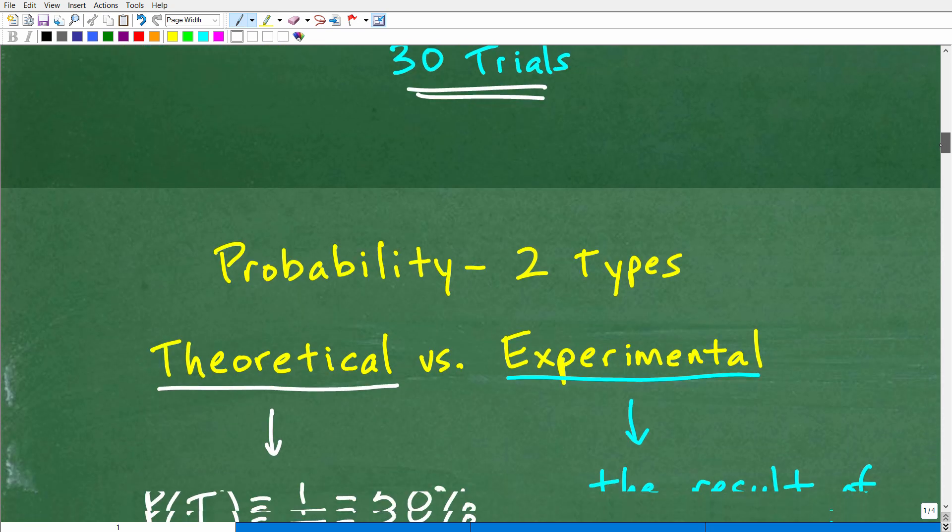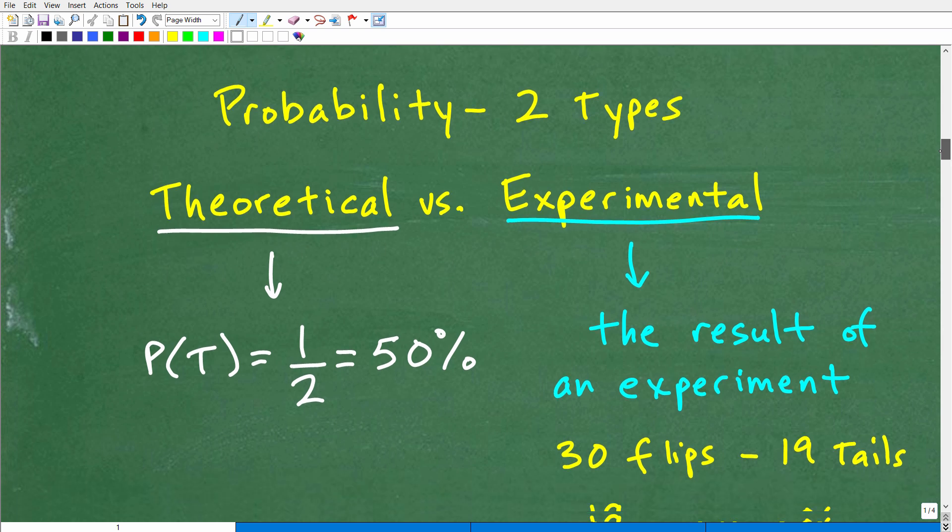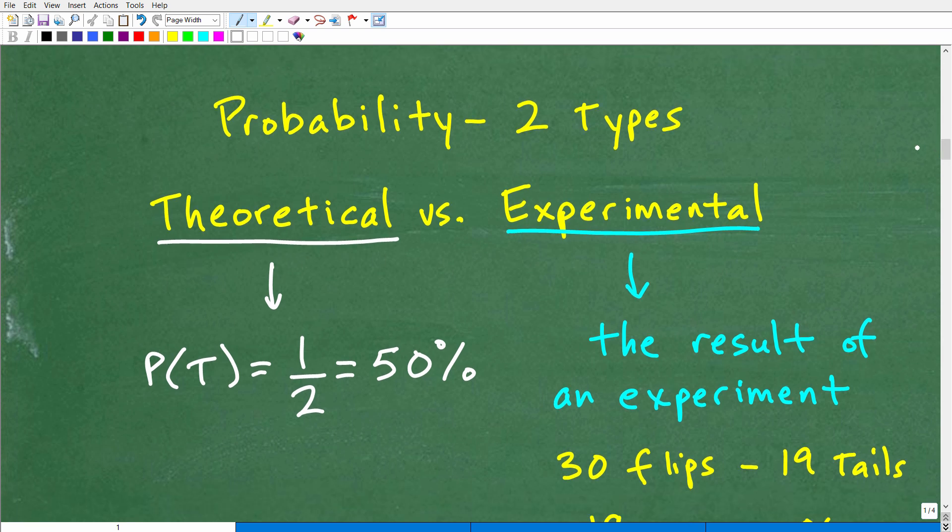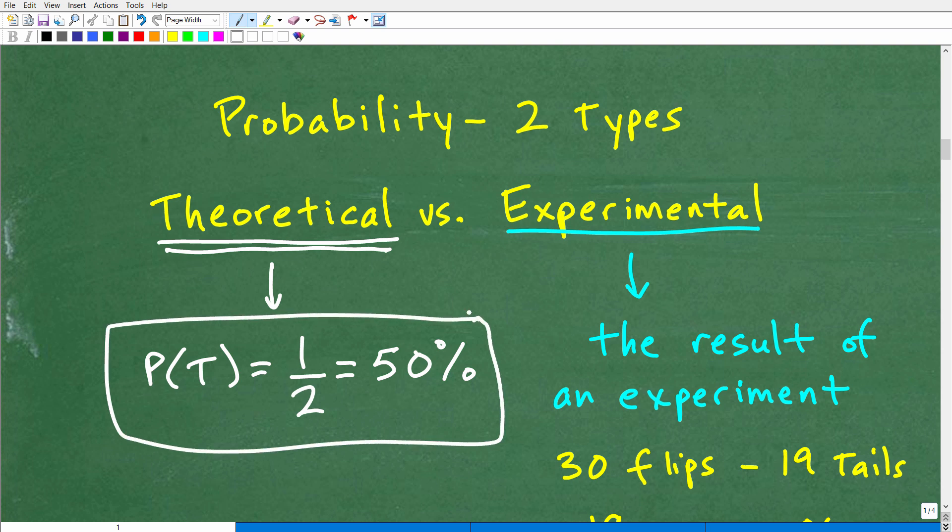Okay. So here's the deal. When we talk about probability, there's basically two types. There are two big picture concepts about probability. The first is theoretical probability. And that's what we're doing with this definition of probability. We're just trying to get what is a theoretical expected outcome of this event occurring.